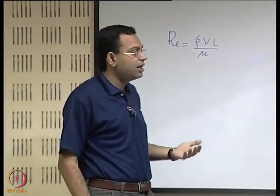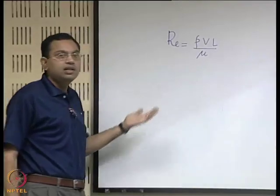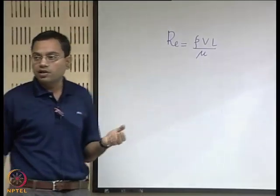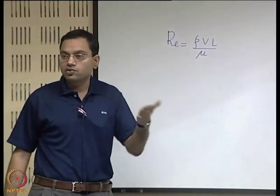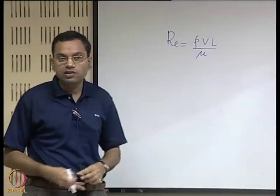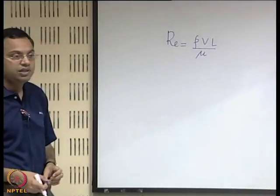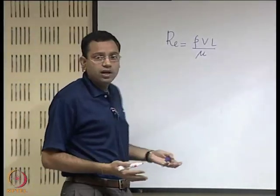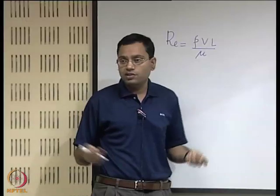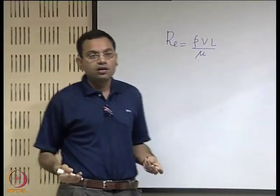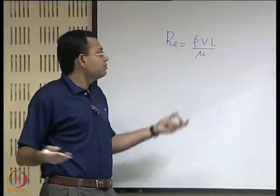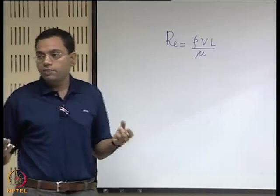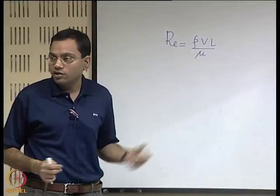We will see later that the Reynolds number will dictate the nature of the flow — whether it is laminar or turbulent. There are many other non-dimensional numbers. Till now we have seen three: Knudsen number, Mach number, and Reynolds number.